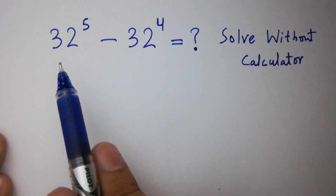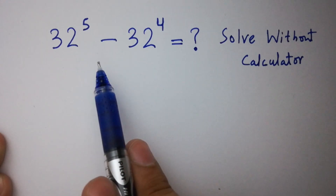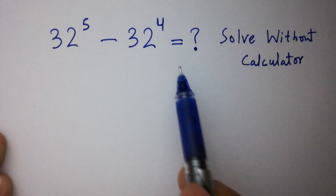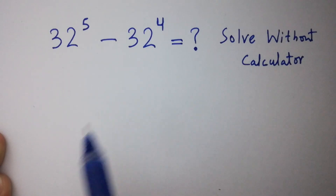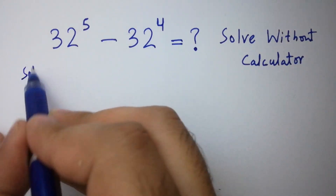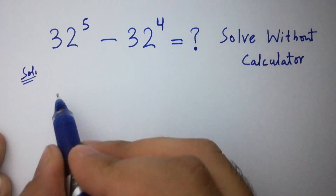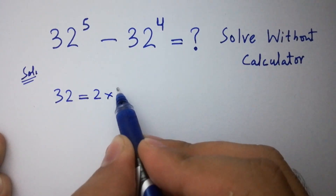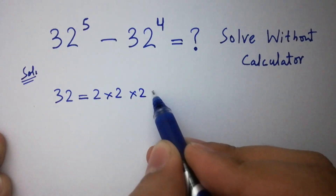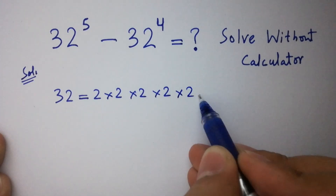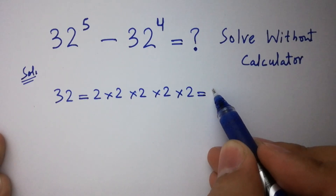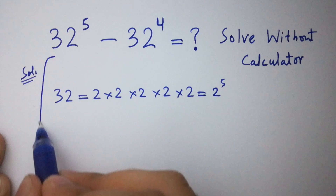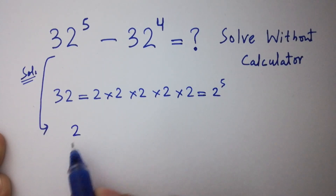Hello friends. 32 to the power 5 minus 32 to the power 4 equals what? Solved without a calculator. Let's have a solution. 32 equals 2 times 2 times 4 times 2 is 8, 8 times 2 is 16, 16 times 2 is 32, which is equal to 2 to the power 5.